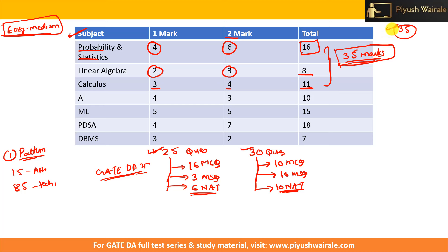For AI, there were four one-mark questions and three two-mark questions, totaling 10 marks. For ML, a good number of questions were asked — five one-mark questions and five two-mark questions — making a total of 15 marks for Machine Learning.